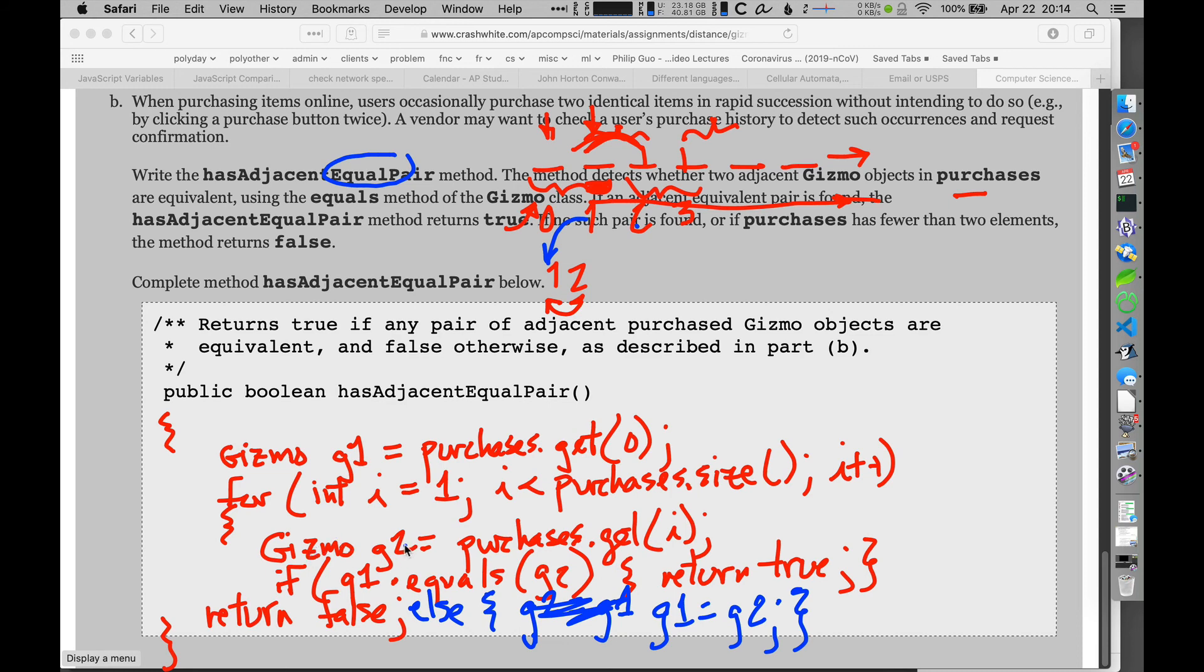Gizmo g2 will now be set to purchases dot get that next element, so we'll get that second element. And now I have a new g1 and g2 that I can compare, and if they're equal I'll return true. So I'll just continually move through the loop there, constantly updating I and shifting g2 into g1, so that when I get a new g2 we can compare those two.